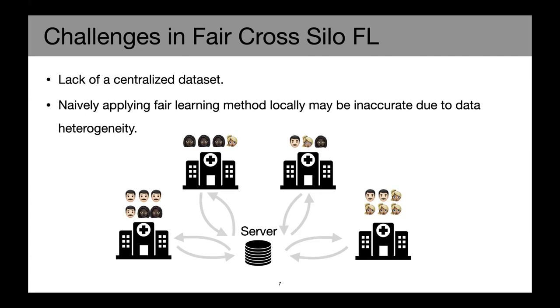A naive baseline is to apply those prior fair learning methods locally at each silo and do maybe some aggregation on top of that. However, that could be very inaccurate due to data heterogeneity. For example, there could be some silos having data only coming from a subgroup of all the protected attributes. However, that will definitely not account for the statistics of the entire data set or the true data distribution accurately.